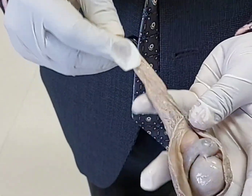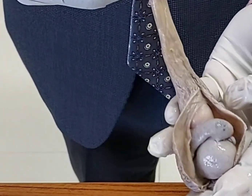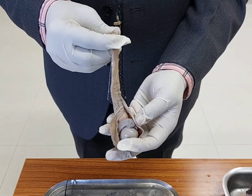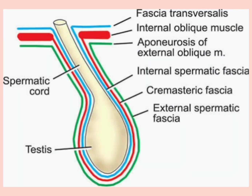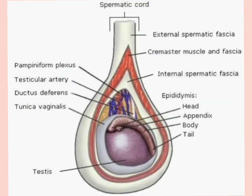What are the coverings of the spermatic cord? There are three main coverings, from outside inwards: one is the external spermatic fascia, which is derived from the aponeurosis of the external oblique muscle; then deep to this is the cremasteric fascia, which is derived from the internal oblique; and the innermost covering of the spermatic cord is the internal spermatic fascia, which is derived from fascia transversalis. So there are three coverings: external spermatic fascia, cremasteric fascia, and internal spermatic fascia.